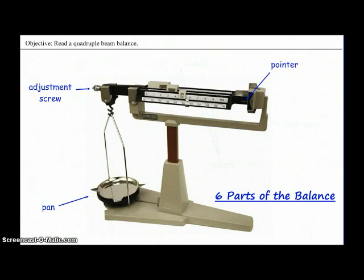On the right hand side of the arm, we have a white line called the pointer, which matches up with the zero mark, which is also a white line. When the balance is properly zeroed out, both of these lines should be equal.